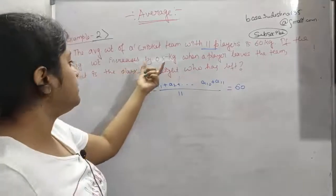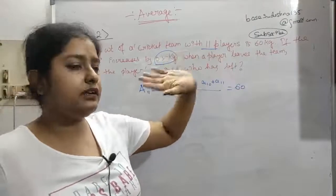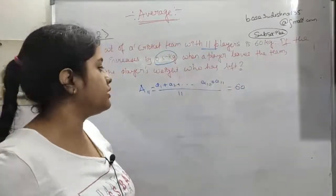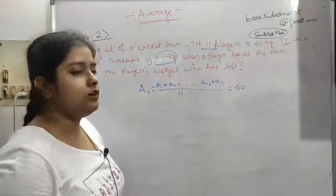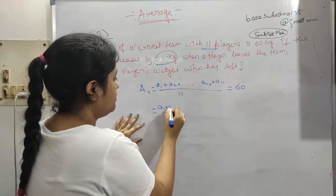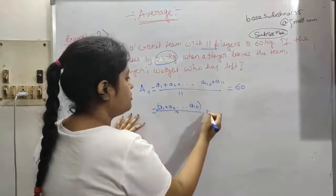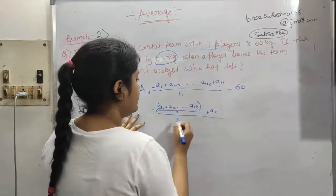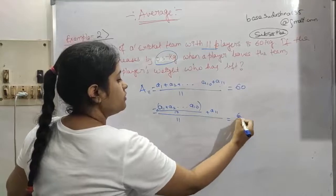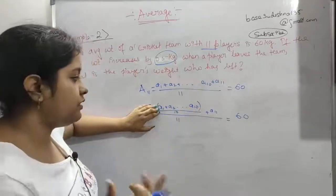If the average weight increases by 0.5 kg when a player leaves the team, we have to find the weight of the player who just left. Let us say the 11th player leaves. We can write a1 + a2 + ... + a10 divided by 10, and the average of 10 members is considered.